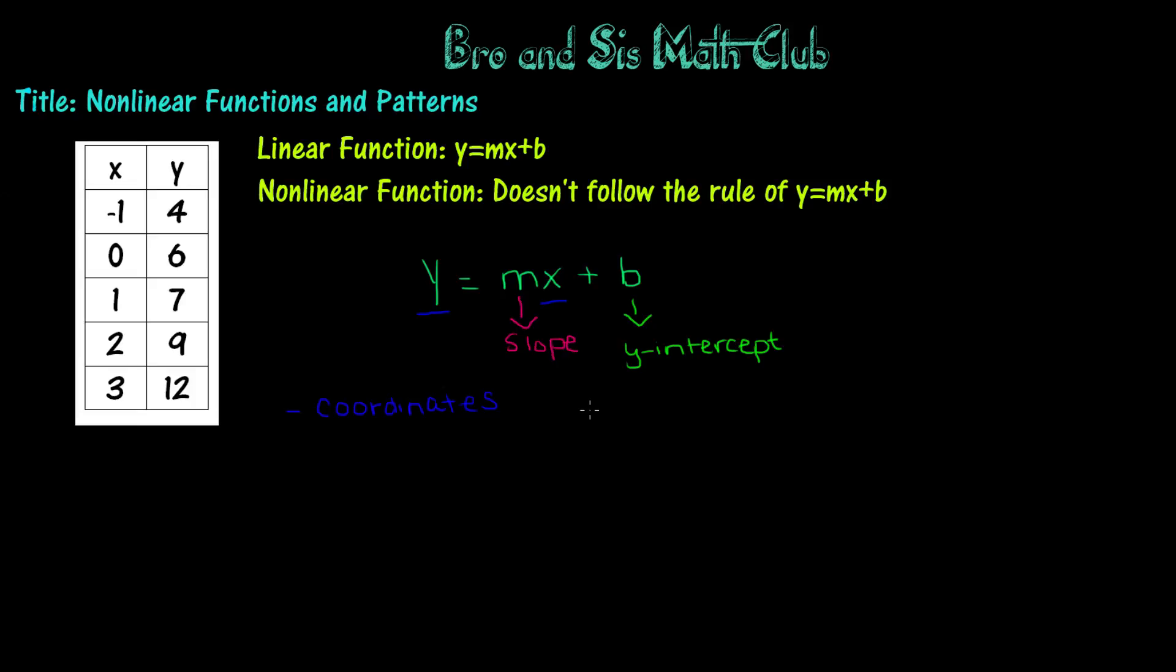Remember that a linear function always follows the rule of y equals mx plus b, which is the standard form of any linear equation or function. In y equals mx plus b, the x and the y are the coordinates, the m is the slope, and the b is the y-intercept. In order to determine whether a function is linear or nonlinear, you need to find the slope.